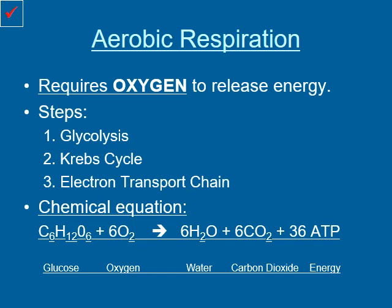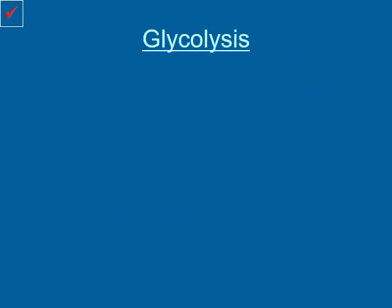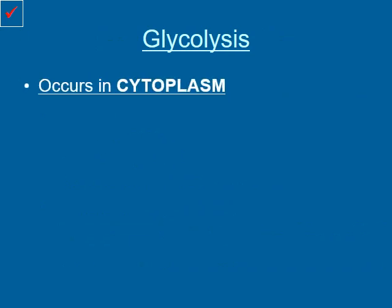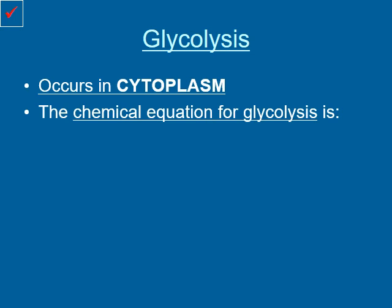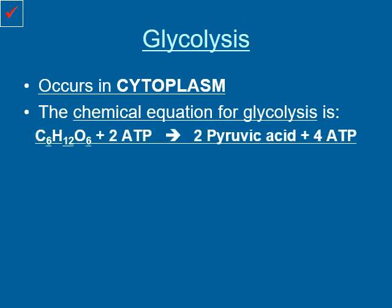Both aerobic and anaerobic respiration start with the same process, which is called glycolysis. Glycolysis occurs inside the cytoplasm. The chemical equation for glycolysis: we start off with glucose, C6H12O6, and we want to go ahead and break this apart. Because glyco and lysis — which make up glycolysis — simply just mean to split the sugar. Considering that we are breaking bonds, we actually have to put energy in, so we're going to put 2 ATP in to break the glucose. Once we have efficiently broken up the glucose, we get 2 molecules of pyruvic acid and 4 molecules of ATP.